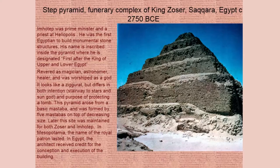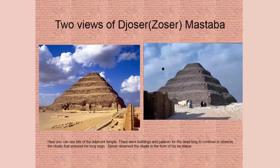Later on this site was maintained for both Zoser and Imhotep. In Mesopotamia, the name of the patron lasted — whoever purchased the work of art. But in Egypt, the architect actually got credit for the conception and the building of a structure. Here are some other views of it — you can get a sense of scale with the person in front and the pyramid far behind.